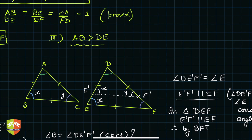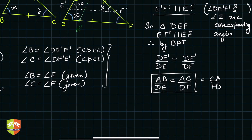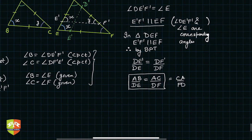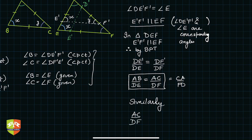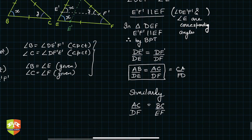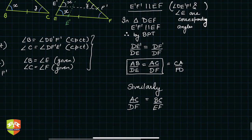We've achieved one ratio. Similarly, by taking a point D' on one side and E' on another side of a different pair of sides, repeating the same process, we can prove that CA/FD = CB/FE. Hence all three ratios can be established together.